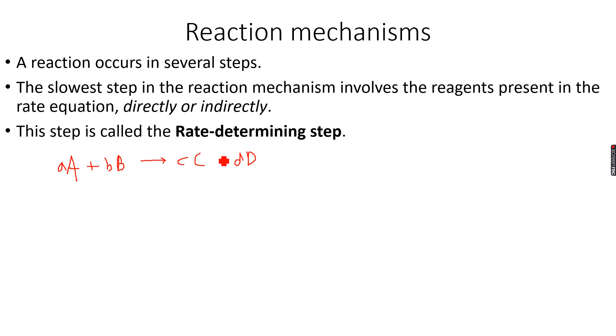So, for example, if it's 2A plus B gives 2C plus 2D, then it's not that two molecules of A react with one molecule of B. It might be that both molecules of A react together to form an intermediate I. Let's label this as step 1.